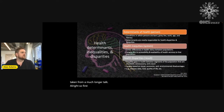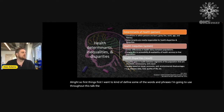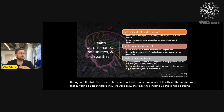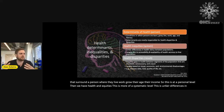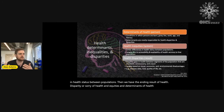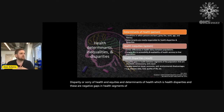First, I want to define some of the words and phrases I'm going to use throughout this talk. The first is determinants of health — the conditions that surround a person: where they live, work, grow, their age, their income. This is at a personal level. Then we have health inequities, which is more at a systematic level — unfair differences in health status between populations. The ending result of health inequities and determinants of health is health disparities: negative gaps in health segments of the population that are avoidable, unnecessary, and unjust.